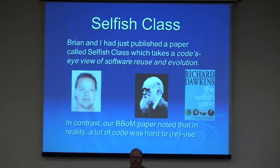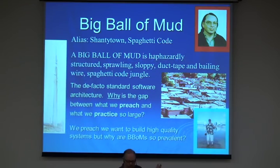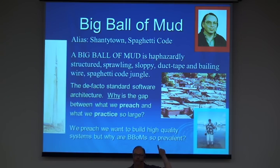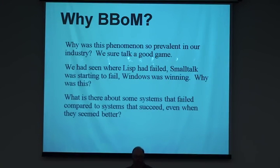We also had things like 'it works out of the box' — one of the first open-source-type ideas: if you Google something, find it, and it works out of the box, it has a better chance of surviving and replicating. But lo and behold, Brian and I noticed a lot of things aren't so nice. A lot of times we end up with what we call 'big balls of mud.' So why are these the most successful architectures? There are more of these than nice, beautiful architectures.